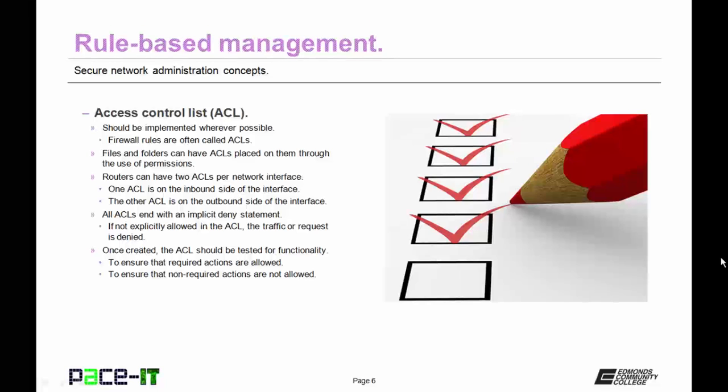The access control list is another part of rule-based management. The ACL should be implemented wherever possible. Firewall rules are also often called ACLs. Files and folders can have ACLs placed on them through the use of permissions. As a general rule, routers can have two ACLs per network interface — one ACL on the inbound side of the interface and the other on the outbound side — and the two ACLs don't have to have the same rules.